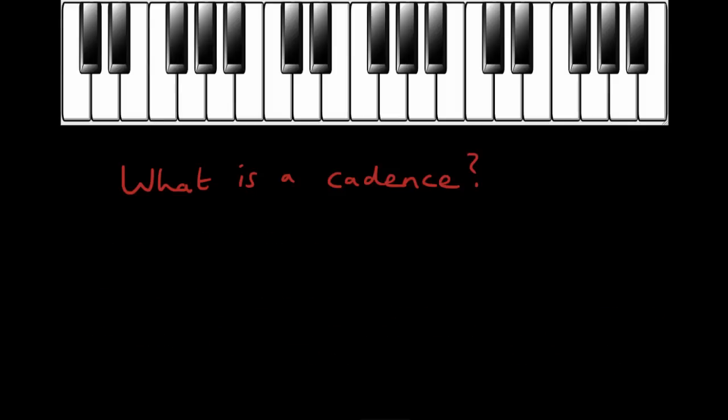Just as there are different types of punctuation mark in written language, we have quite a few different types of cadence used at different points in a musical structure. Some of them sound really final and finished — like a full stop, saying this is the end of a significant part of the composition. Others are less final, like a comma, that just helps divide a bigger idea into smaller pieces.